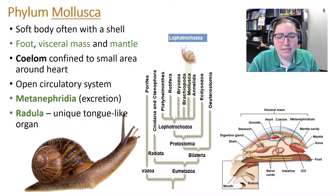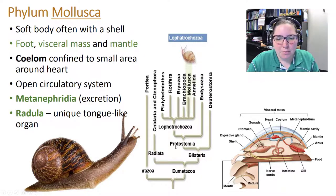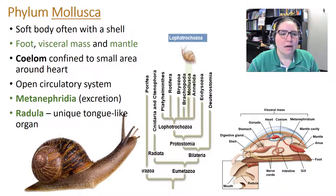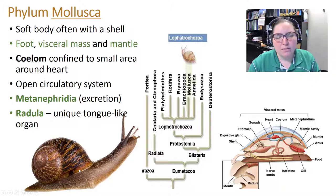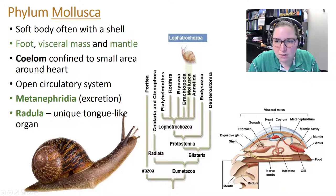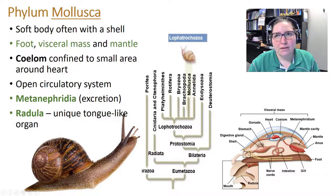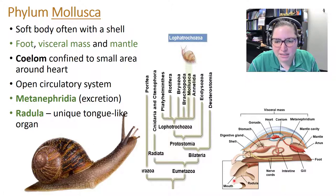The phylum Mollusca — within Eumetazoa, bilateral, protostomes, lophotrochozoa. Mollusks have a soft body often with a shell, a foot, a visceral mass, and a mantle. They have a coelom confined to a small area around the heart, an open circulatory system, excretory structures called metanephridia, and a unique radula — a scraping tongue.